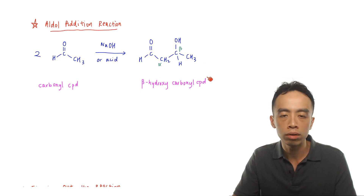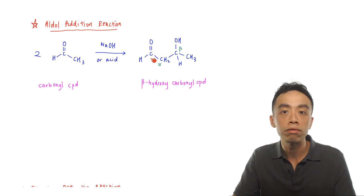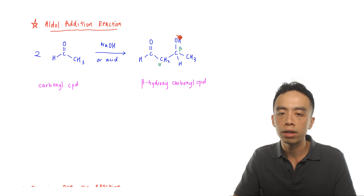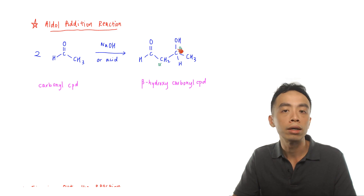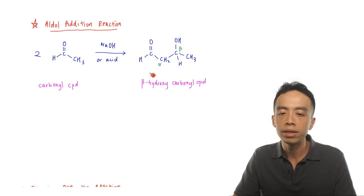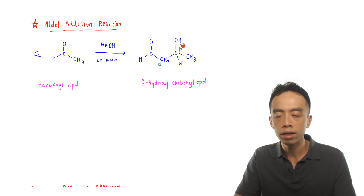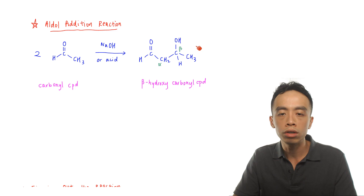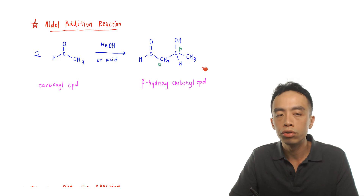Why is the product called a beta hydroxy carbonyl compound? The reference functional group is the carbonyl — in this case the aldehyde. The first carbon directly attached to the reference functional group is the alpha carbon; the next carbon is the beta carbon. If an alcohol functional group is attached to the beta carbon, it is called a beta hydroxy functional group. The product is a beta hydroxy carbonyl compound because the hydroxy functional group is two carbons away from the carbonyl group.